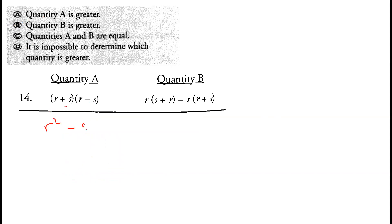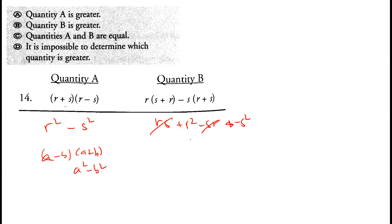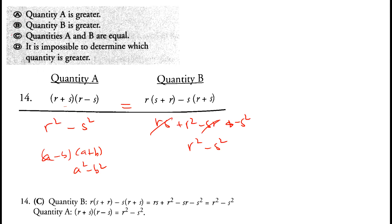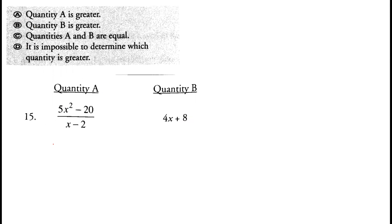If you open up (r minus s)(r plus s), using a squared minus b squared equals (a minus b)(a plus b), this gives r squared minus s squared. Expanding the other expression: rs plus r squared minus sr minus s squared — the rs and sr cancel — also giving r squared minus s squared. Both expressions are equal, so option C is correct.